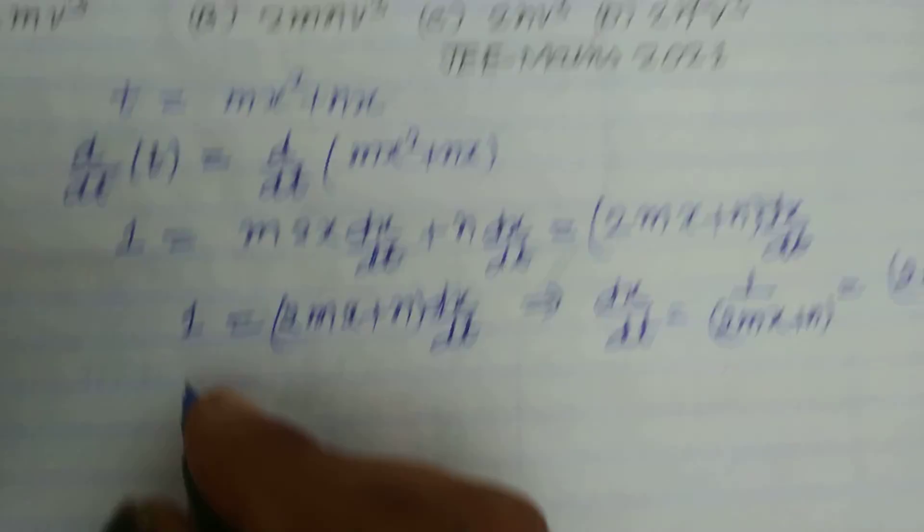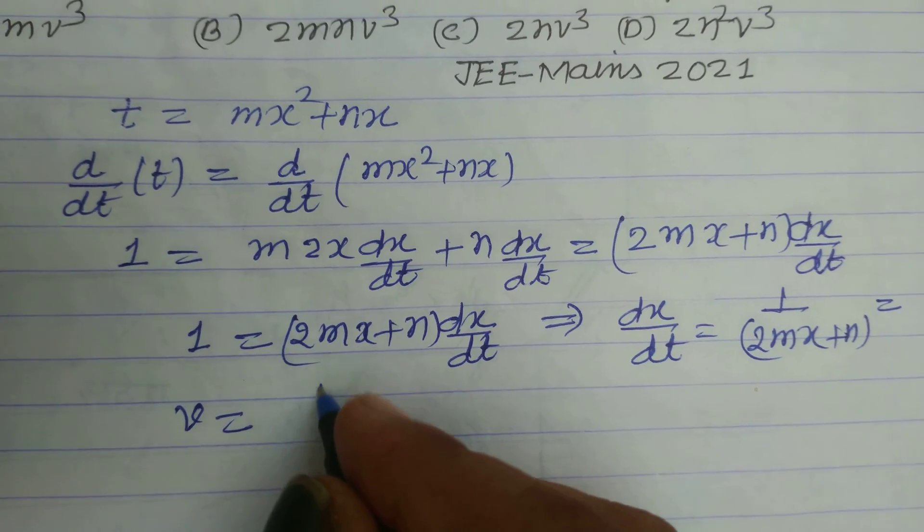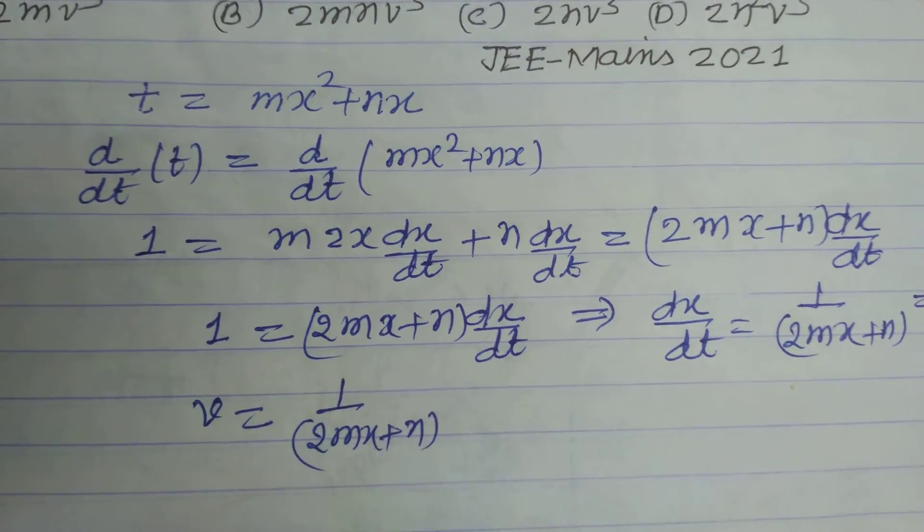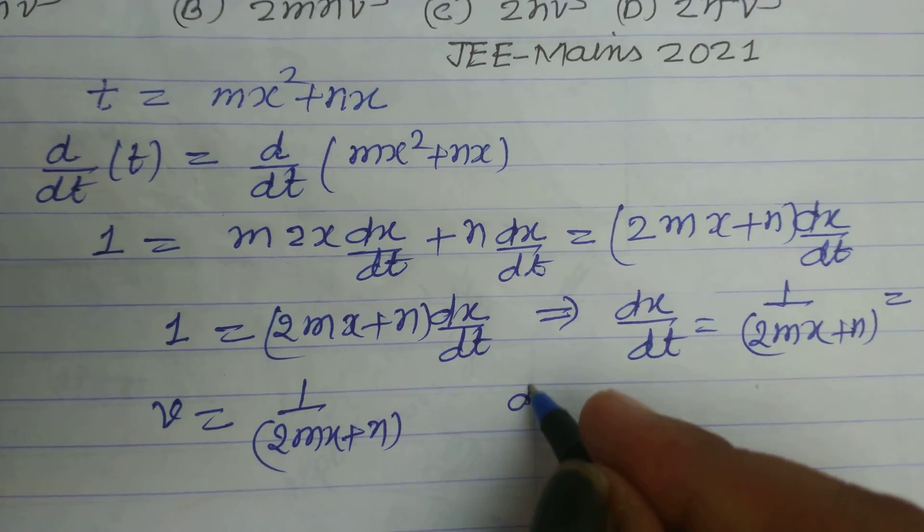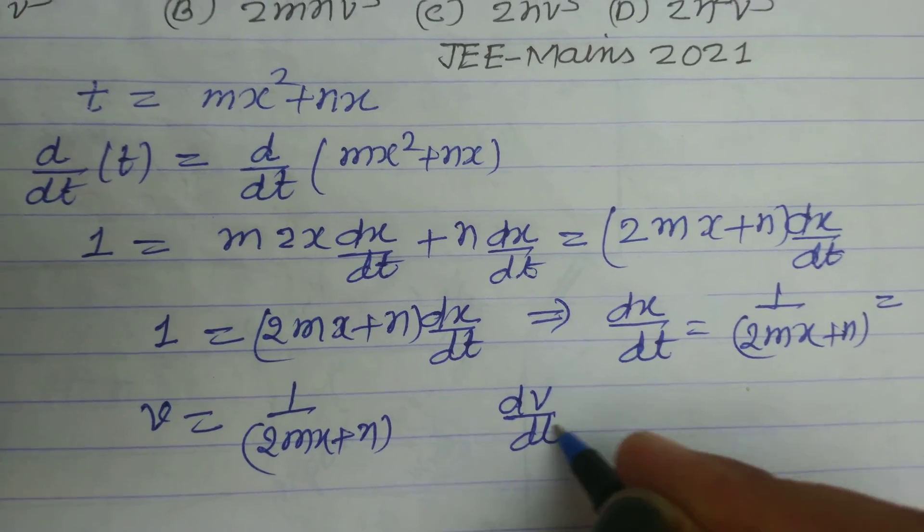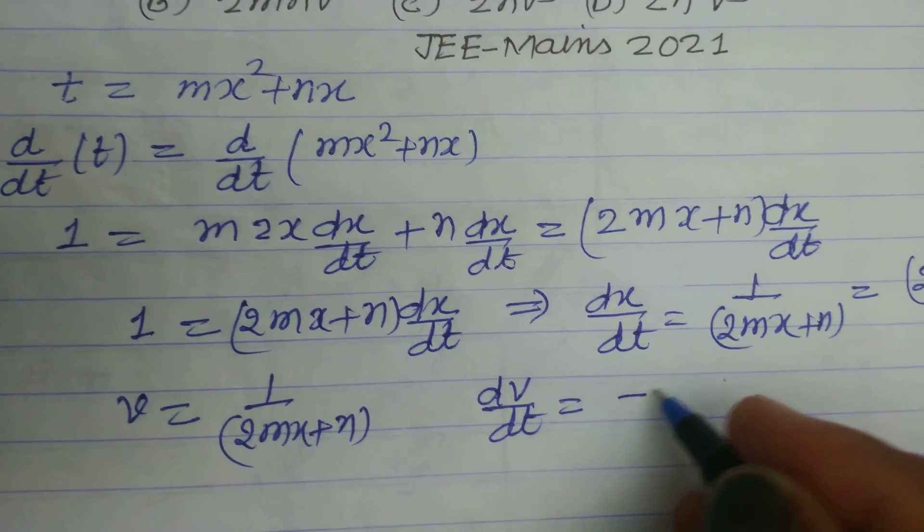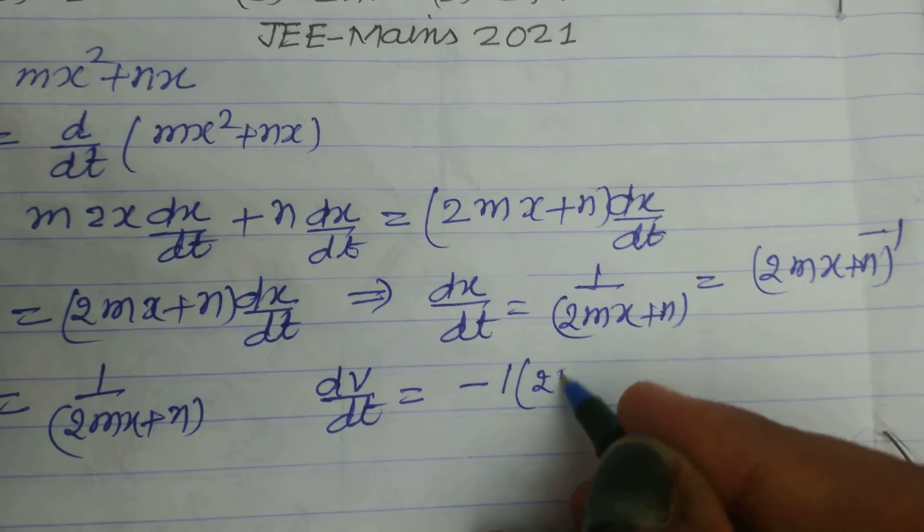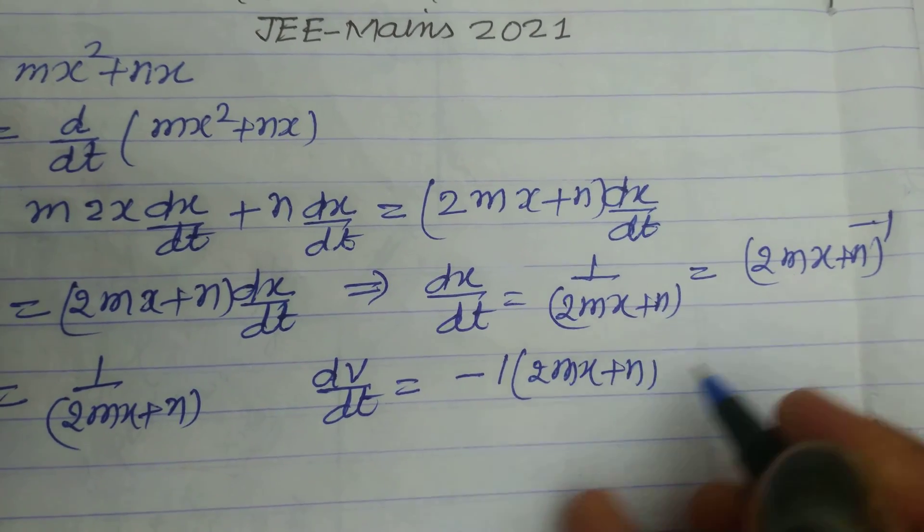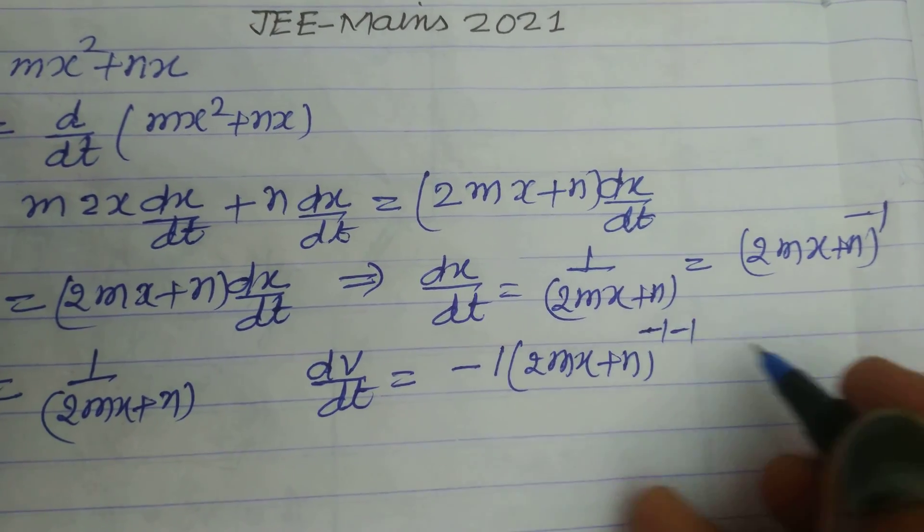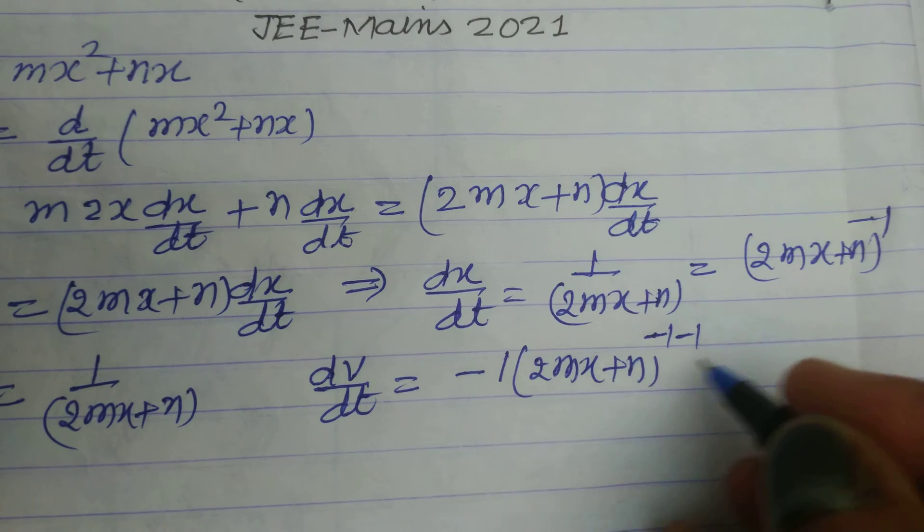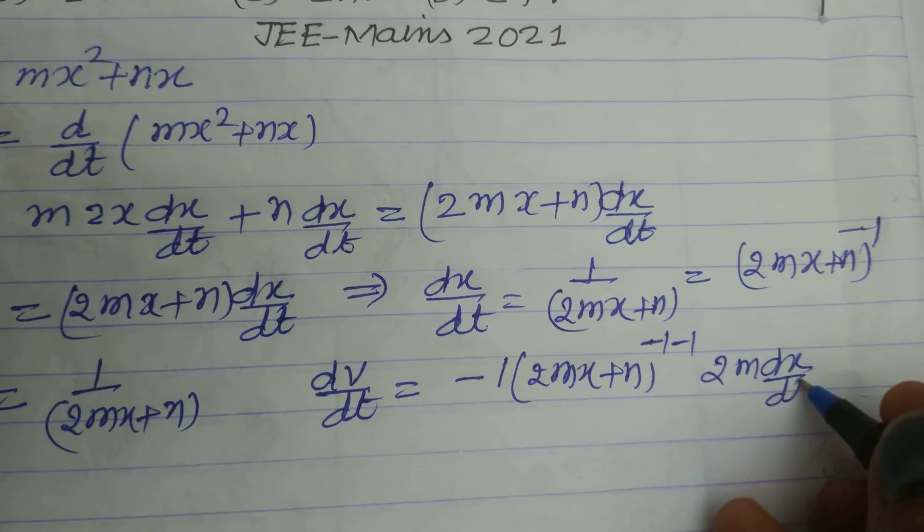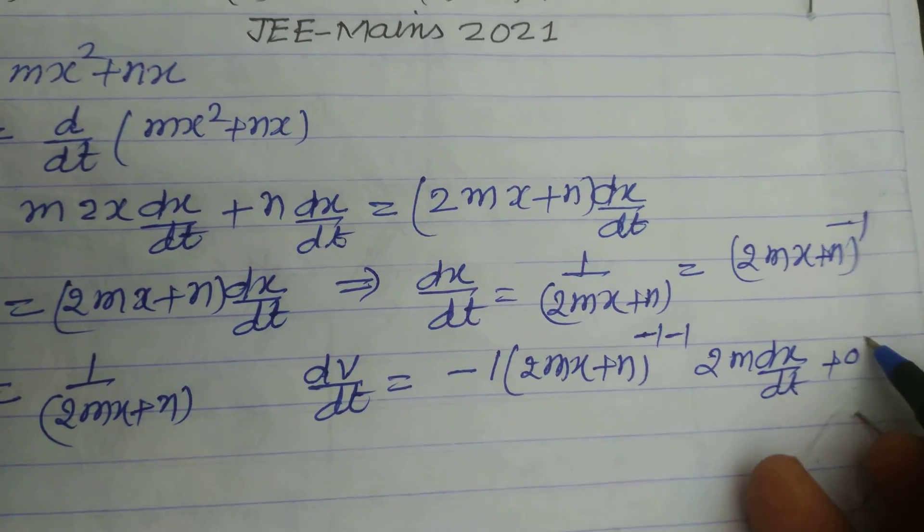This is v, velocity = 1/(2mx + n). Now differentiating again: dv/dt = -1(2mx + n)^(-2) times 2m(dx/dt), and differentiation of n is 0.